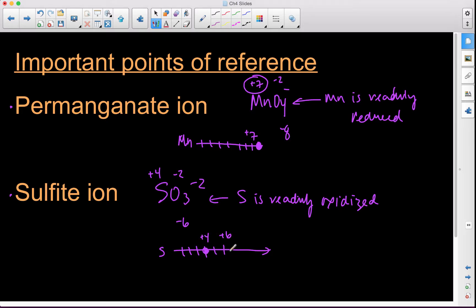Sulfur will readily lose electrons. Manganese will readily gain electrons, and that's how these reactions are going to occur.